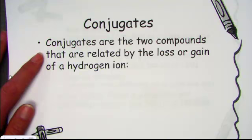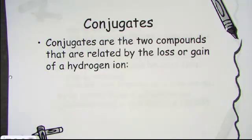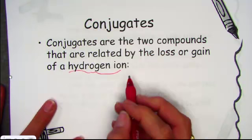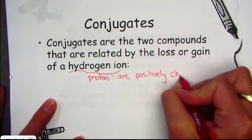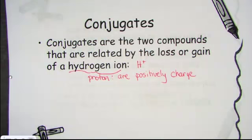Conjugates are formally defined as those two compounds that are related by the loss or gain of a hydrogen ion. Protons are positively charged. When I transfer a proton — a hydrogen ion — think about moving on the number line: receiving a proton, you become one more positive; losing the proton, you become one more negative. We must consider charges with the Bronsted-Lowry theory.